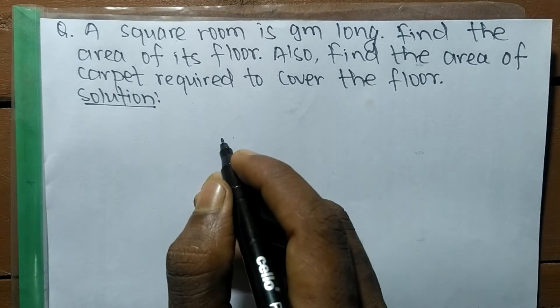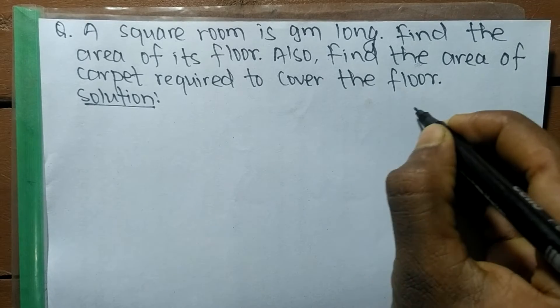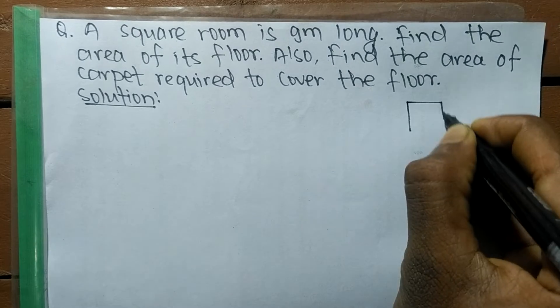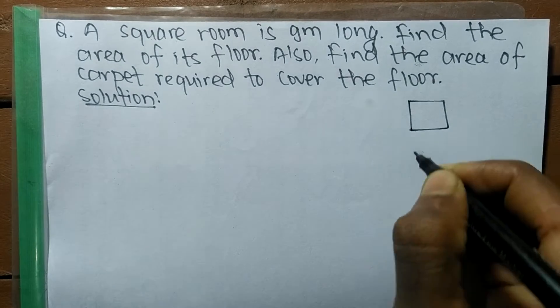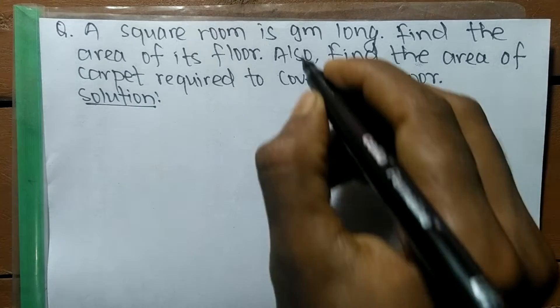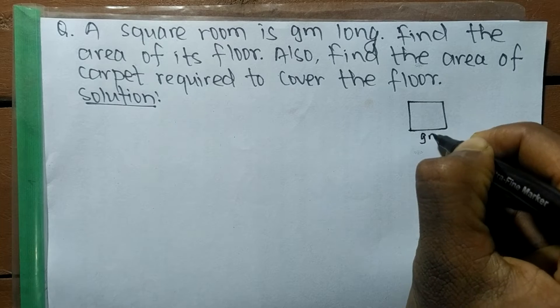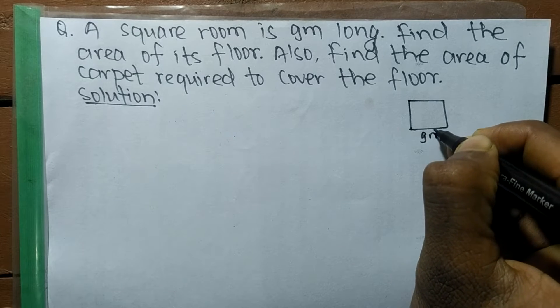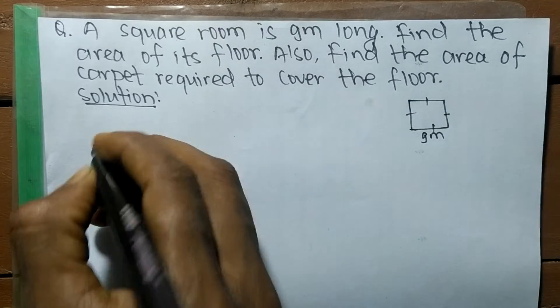We have a square-shaped floor. The square means its all sides are equal. So we have the square-shaped floor of the room and it is 9 meters long. A square has all sides equal.